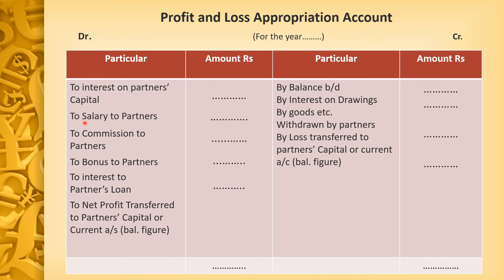To Salary to Partners — if a partner is receiving a salary, that will be included. Commission to Partner, Bonus to Partner, Interest on Partner Loan — important: interest on partner loan is charged at 6% according to the partnership deed, whether given or not given. By Balance — whatever profit is given in the question, Interest on Drawing, by goods withdrawn by partner if any, by loss transferred to partner capital/current account — then net profit. In the question, either net profit or net loss will be there, and its distribution will be according to ratio — for example Ram and Shyam in ratio 3:2.